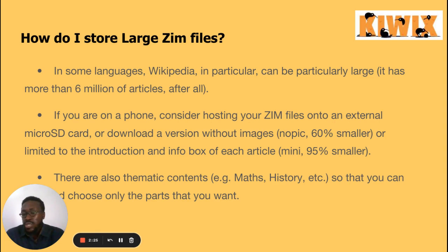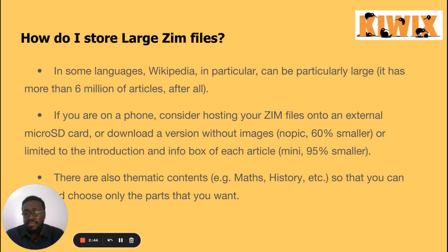Alternatively, you can download a version without images — that's the 'nopic' version, which is 60 percent smaller. For example, if the entire Wikipedia is about 80 gigabytes, without images it is going to be 60 percent smaller, so you can have the content without images.